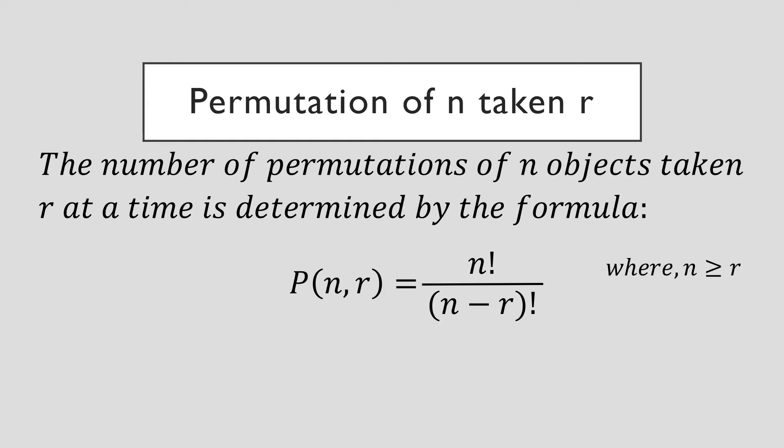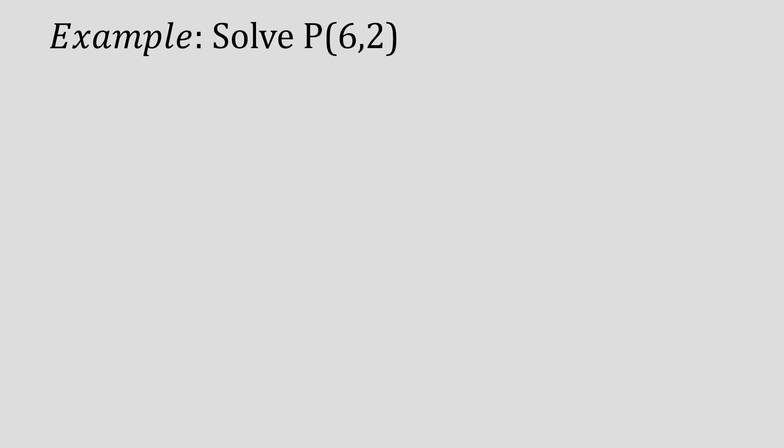In other words, r here should always be smaller or equal to n. Let's try how to use that formula to solve for permutation of 6 taken 2. Here, the value of n is equal to 6 and the value of r is equal to 2.